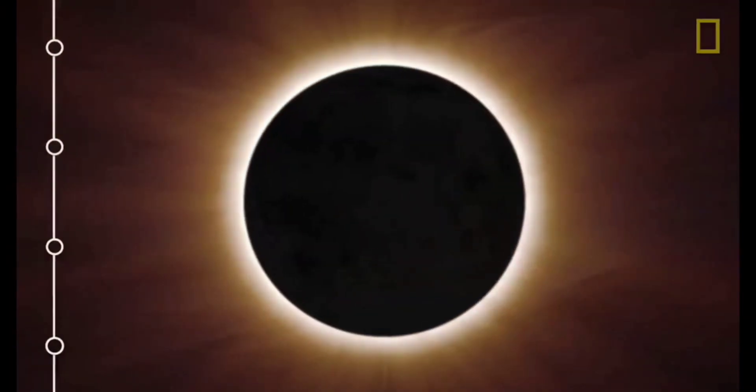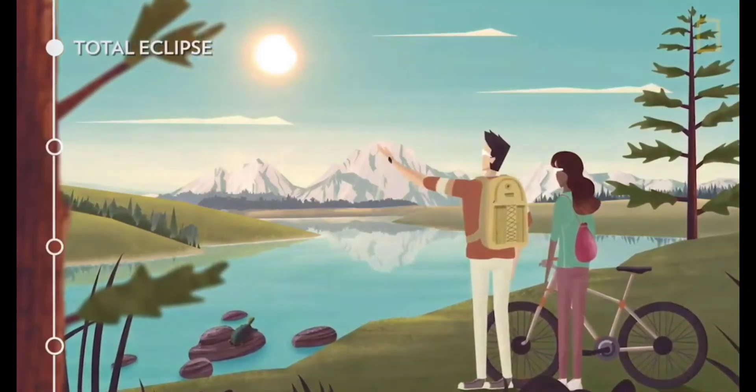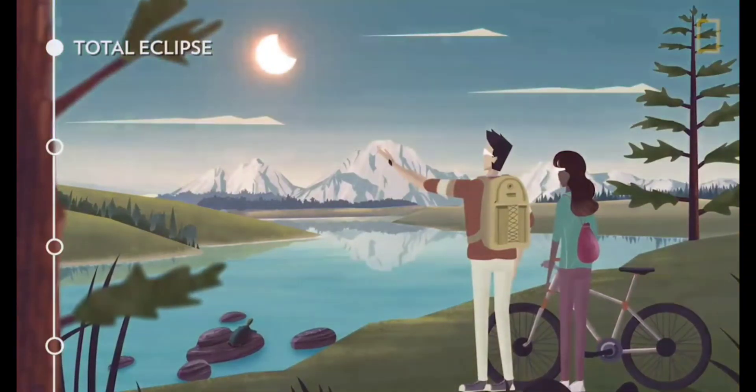The first one is the total solar eclipse. It begins when the moon covers the entire disk of the sun and we see the diamond ring effect. This is the most dramatic stage of total solar eclipse.